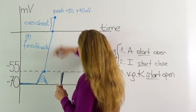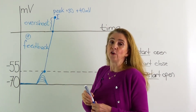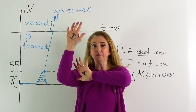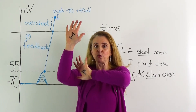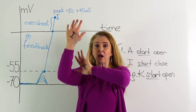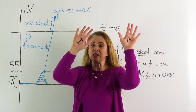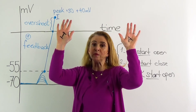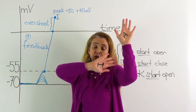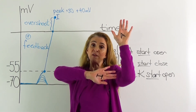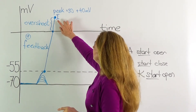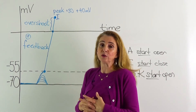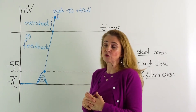This is because the inactivation gates of voltage-gated sodium channels close. At the resting membrane potential, the activation gate was closed and the inactivation gate was open. When the cell reaches the threshold, the activation gate opens quickly, but the inactivation gate closes relatively slowly. During the time when both gates are open, sodium is moving in, but the time during which sodium can move is limited by the closure of the inactivation gate, which happens in milliseconds. Because the inactivation gate closes, no more sodium can enter the cell, and the membrane potential does not reach the equilibrium potential of sodium.